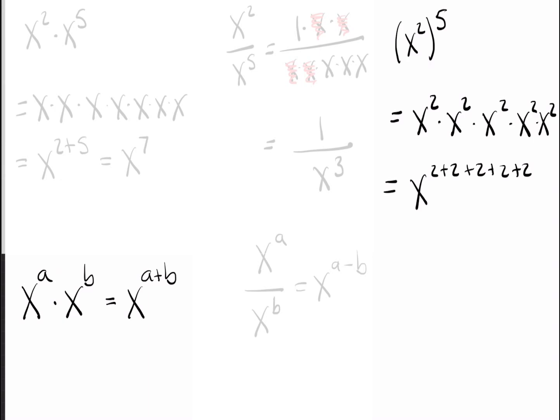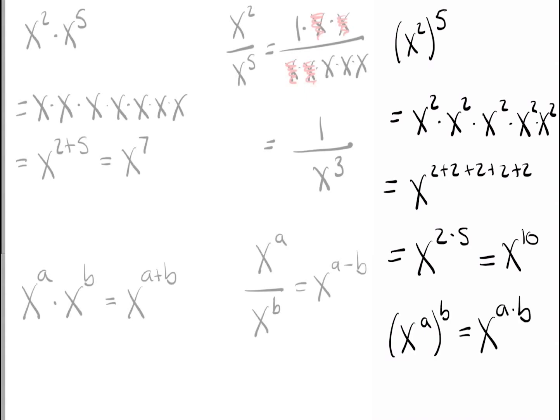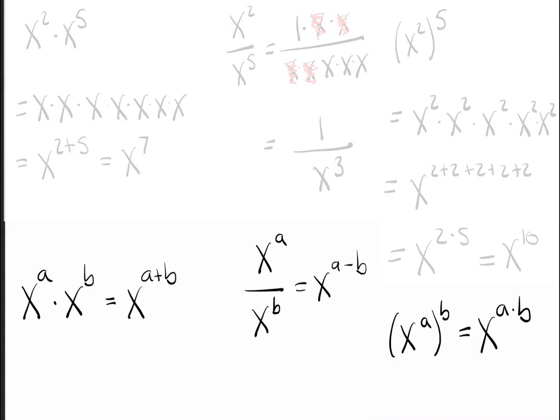Again, just using that first rule. And a little bit nicer way to write this is x to the 2 times 5, because I'm adding two together five times. You can already see what the answer is going to be. x squared to the fifth power equaled x to the 2 times 5, or to make it look nicer, x to the 10. So, again, what's the general rule? Let's go ahead and write it out. If you have x to the a to the b power, that's just going to be x to the a times b. And there you go. Now you know how to deal with all three of the powers that are going to show up.